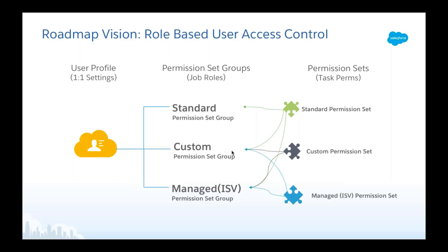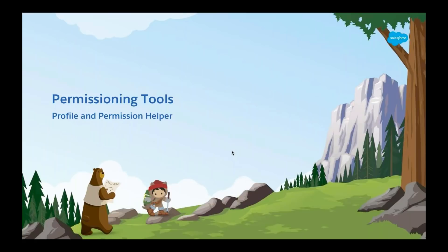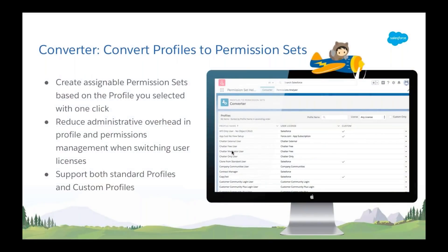Some of you might say this is appealing but a little intimidating — you already have hundreds of profiles in your org and don't know how to get to a state where you can fully adopt permission sets and the group feature. This sounds like a big lift, but don't worry and don't panic — that's why we are here to help. We've prepared tools, and that's why I'm here to introduce the Profile and Permission Set Helper, a free app you can download from the Salesforce AppExchange to help you with this migration.